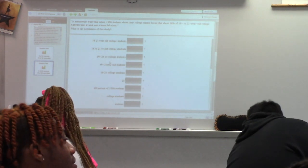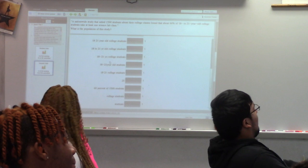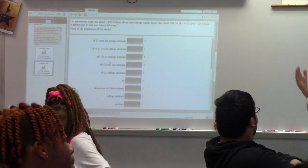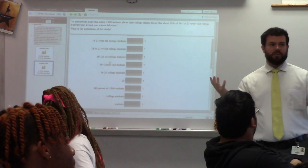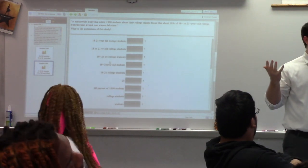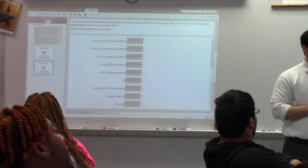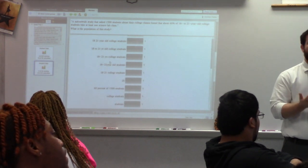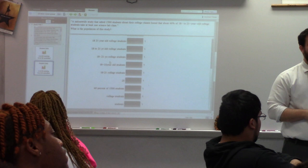So what makes or what should allow us to make a decision about if it was the 18 to 21-year-olds or if it was the 1,500? How do we make that decision? The population. Okay. But how do you know which one it is?